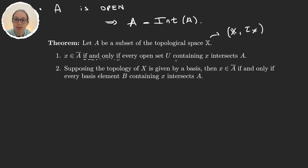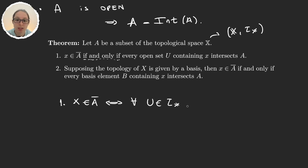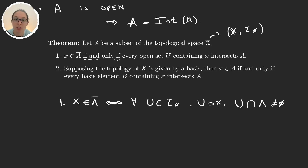...every open set containing x intersects A. What this is telling us is that x is in the closure if and only if, for every open set U in the topology that contains x, the intersection U ∩ A is non-empty — meaning there is an element in the intersection.